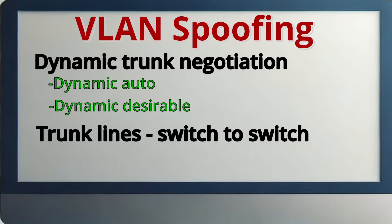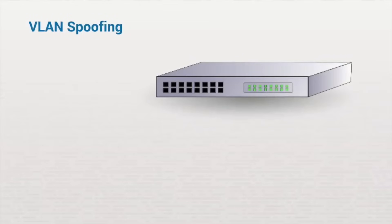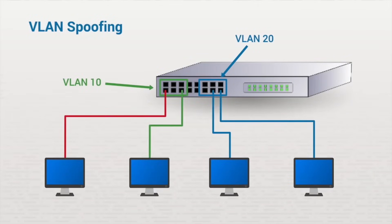A trunk connection allows data from one switch to pass to another. A spoofing attack takes advantage of this by fooling the switch into thinking the attacker is connected using a trunk line. Our switch here is configured with two VLANs, VLAN 10 and VLAN 20, with both having several computers connected to it. Our attacker, a disgruntled employee, is connected to VLAN 10.